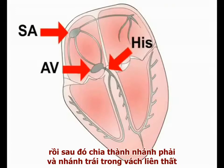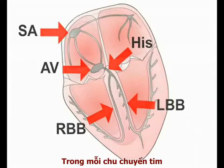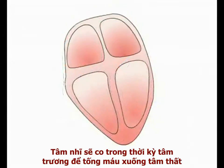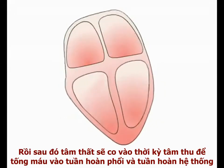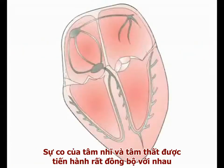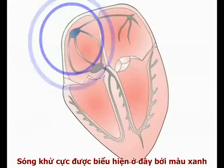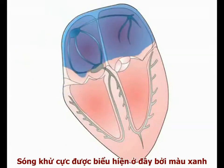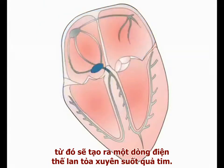The bundle of His divides into the right and left bundle branches in the interventricular septum. During each cardiac cycle, the atria contract in diastole to fill the ventricles, which then contract during systole to supply blood to the lungs and the systemic circulation. Contraction of the atria and ventricles is tightly coordinated by a wave of depolarisation spreading through the muscular walls of these chambers. The depolarisation wave, seen here in blue, reflects movement of charge across myocyte membranes, and is in effect an electrical current spreading through the heart.